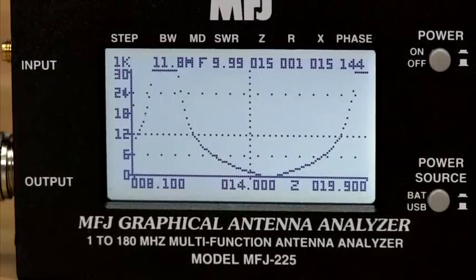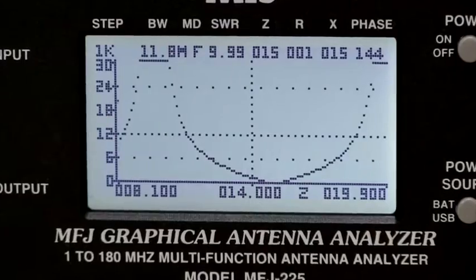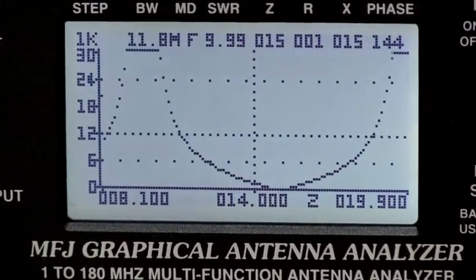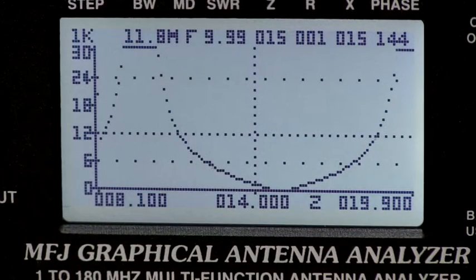The MFJ-225 simultaneously compiles and displays all important parameters you need on a single screen, giving you a wider range of results at a glance.